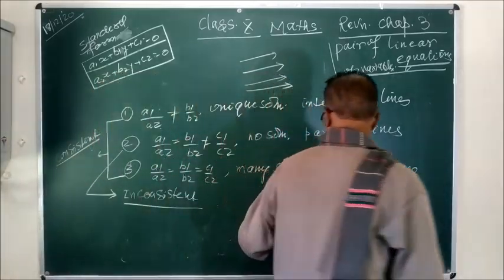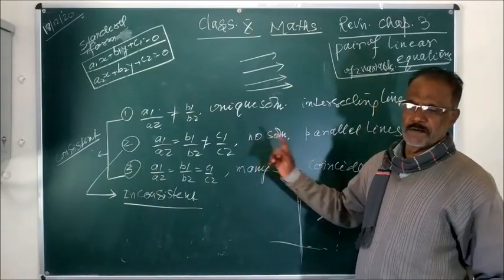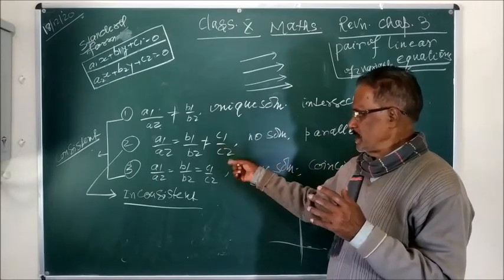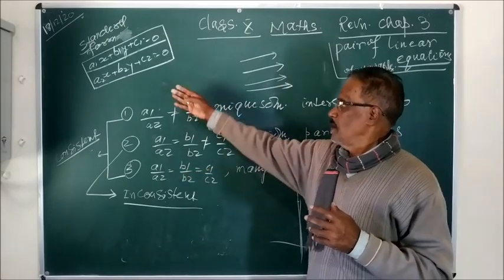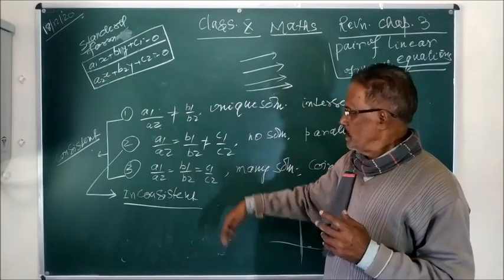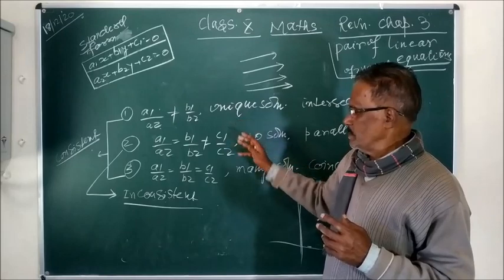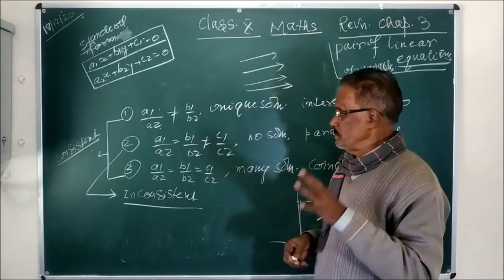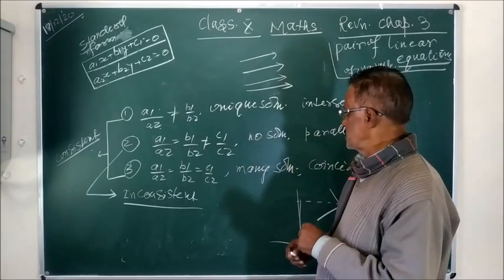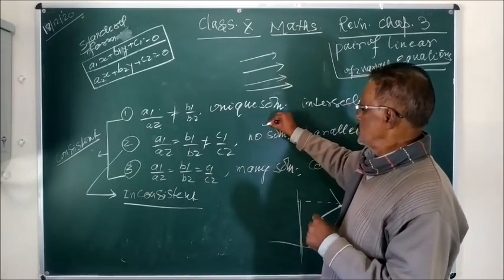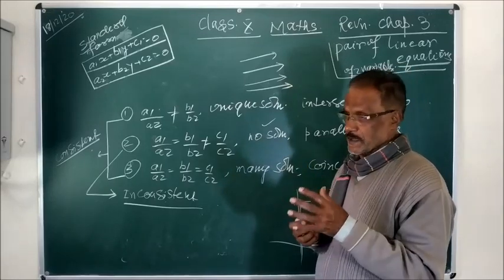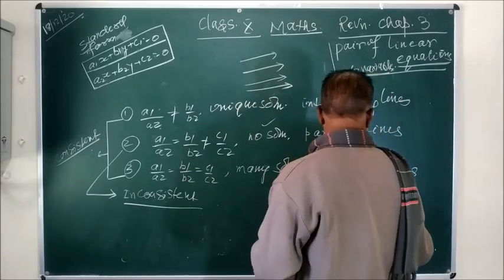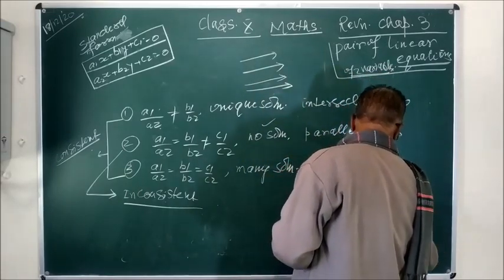Number two: if A1/A2 equals B1/B2 but is not equal to C1/C2, you can find this very easily by finding the ratio of the coefficient of x, coefficient of y, and constant term. So if this condition holds — A1/A2 = B1/B2 ≠ C1/C2 — there will be no solution for those types of equations. And if you represent them on a graph, you will find the lines are parallel.